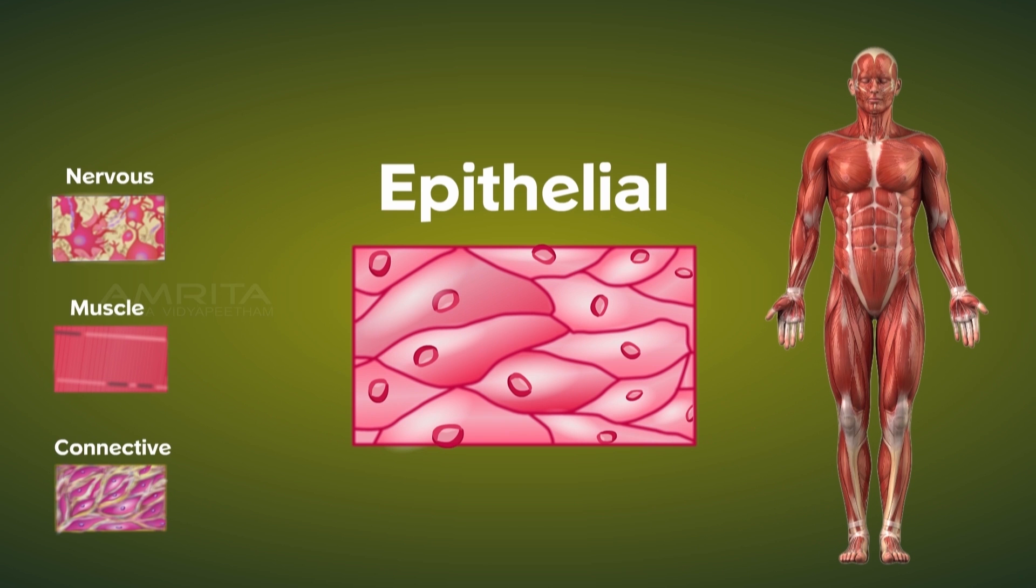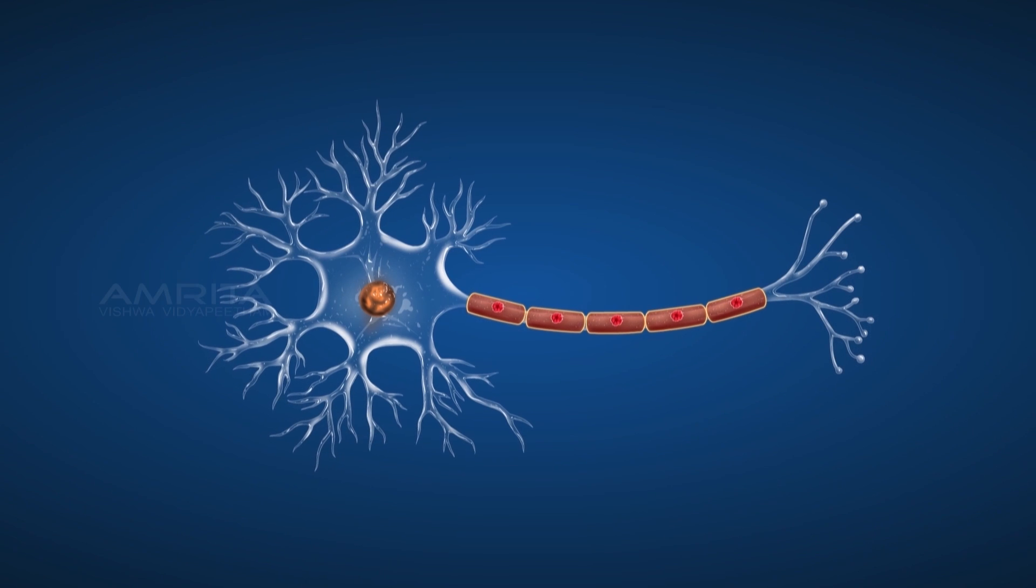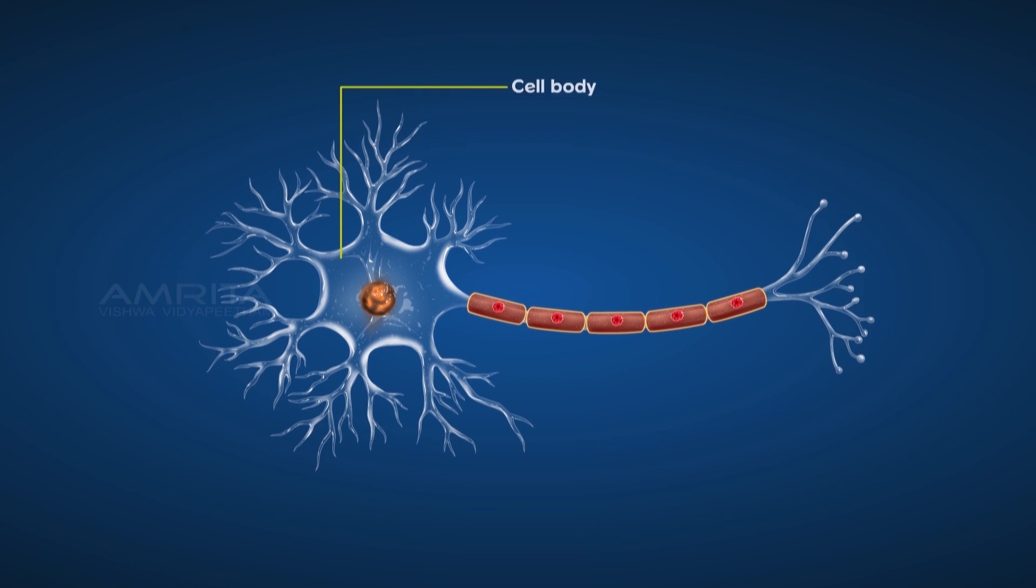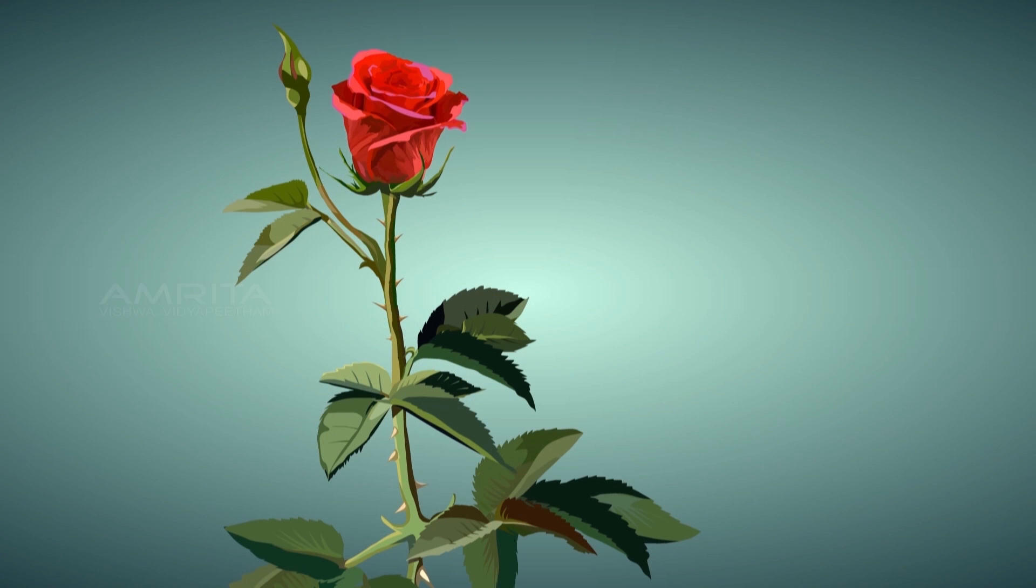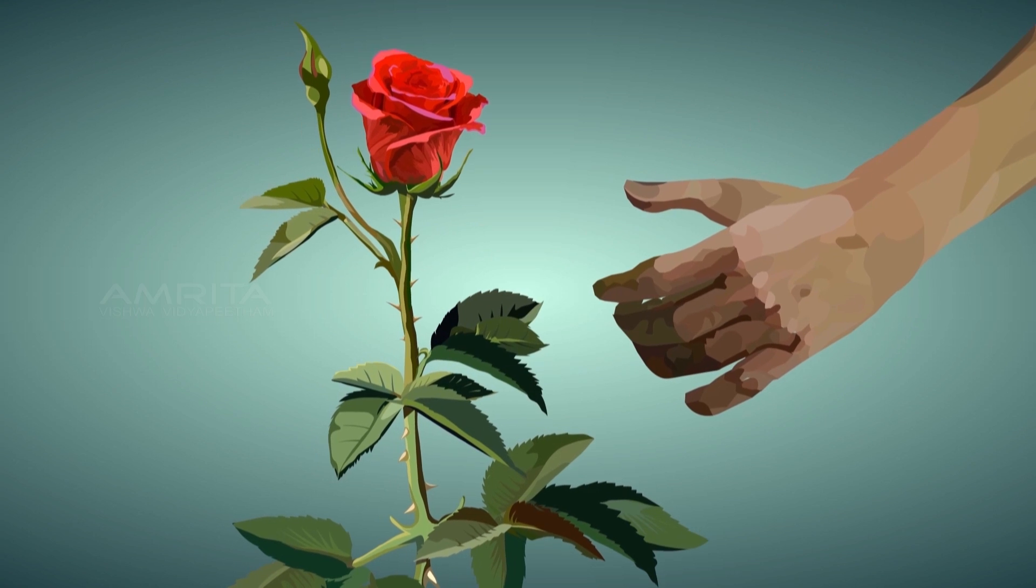The next tissue type is nervous tissue which consists of a nerve cell or neuron that has a cell body containing the nucleus. The cell body extends and forms specialized cell parts called dendrites and axons. These are nerve cells that help you retract your hand when you touch a thorn.